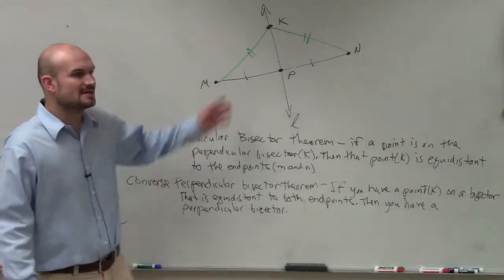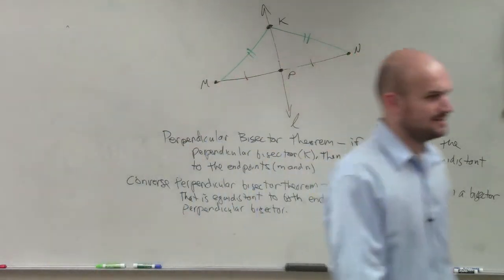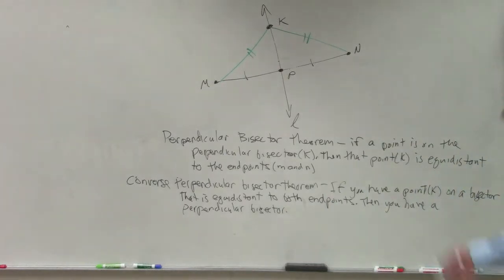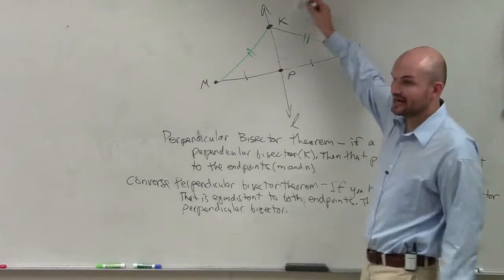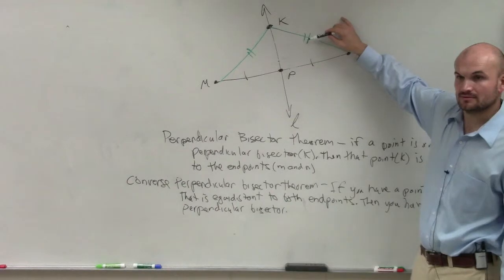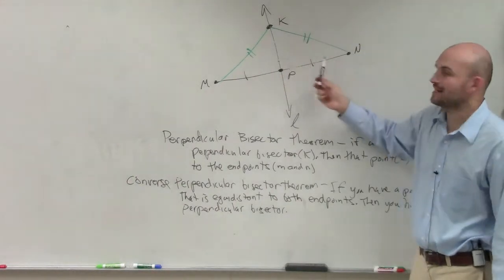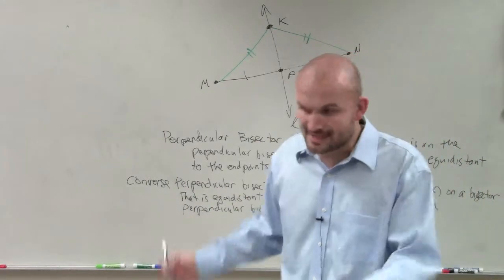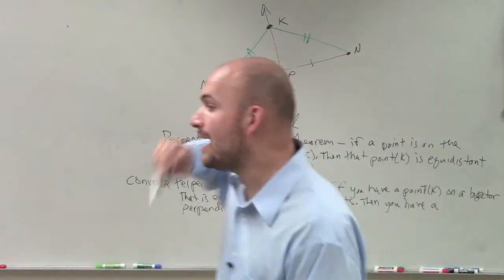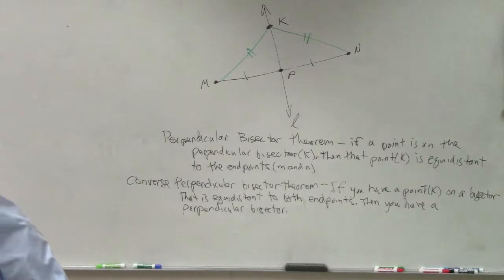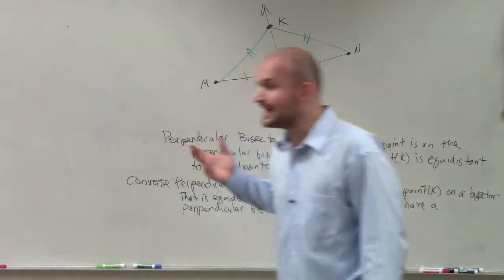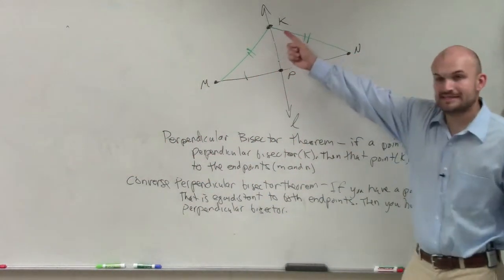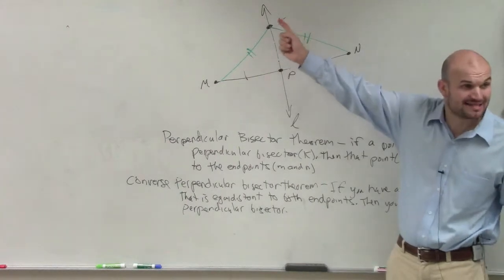So what I'm trying to tell you guys is let's say I give you a picture that looks like that. The only thing I have right there is I say, hey guys, that line is equal to that line. That line is equal to that line. This is a bisector. You know it's a bisector. It cuts it in half. But you also know higher up on that line is a point that's on that bisector.